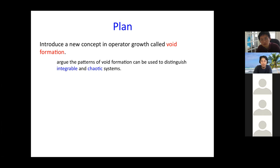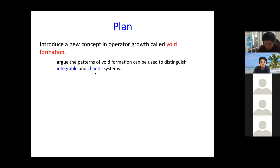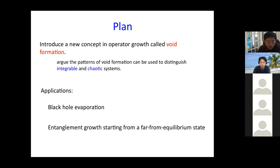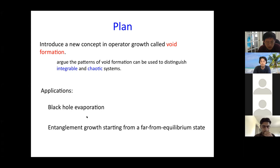I would like to introduce a new concept in operator growth called void formation, and I will argue that the patterns of void formation can actually be used to distinguish integrable from chaotic systems. I will then use this for two applications: one is to study simple models for black hole evaporation, and the second is on entanglement growth starting from some far-from-equilibrium state. We will see these two aspects are closely related.